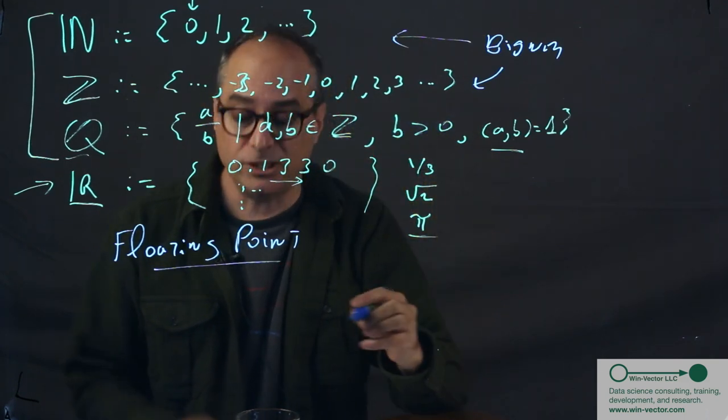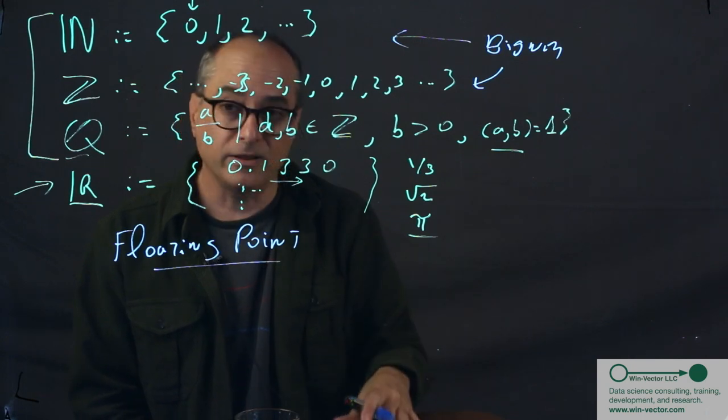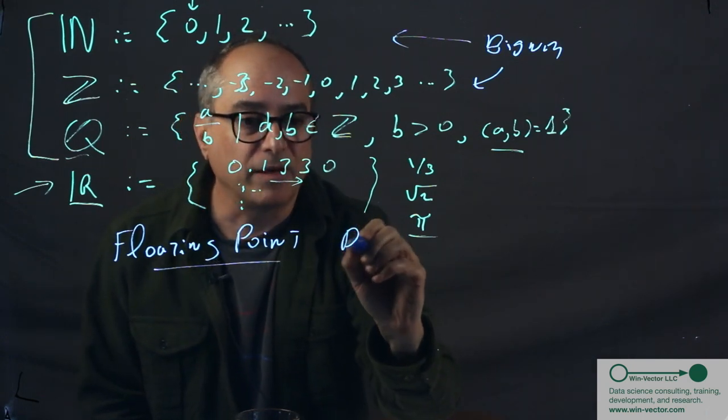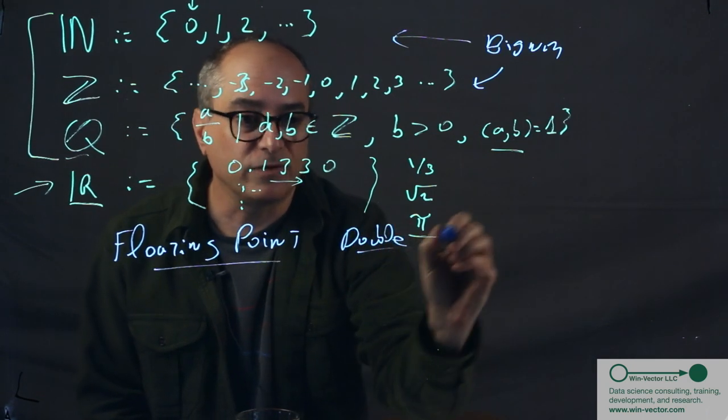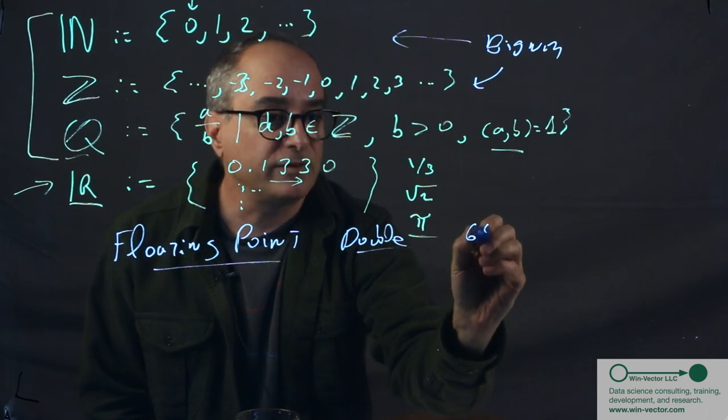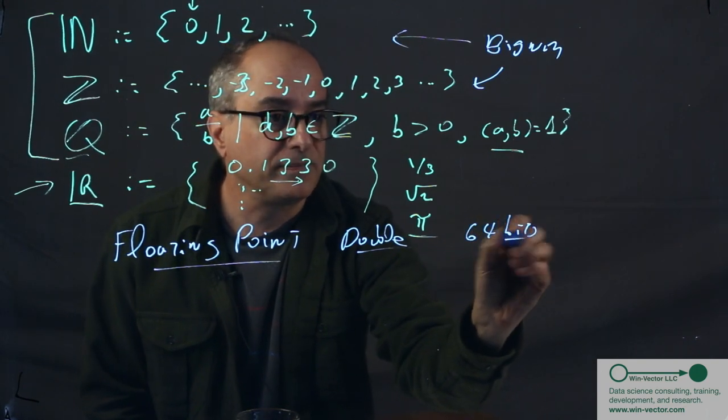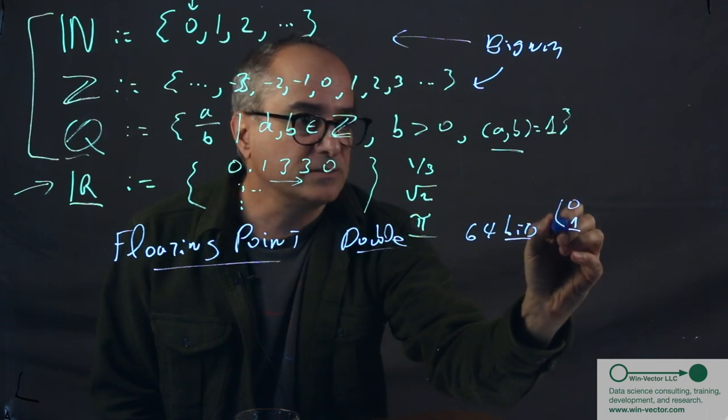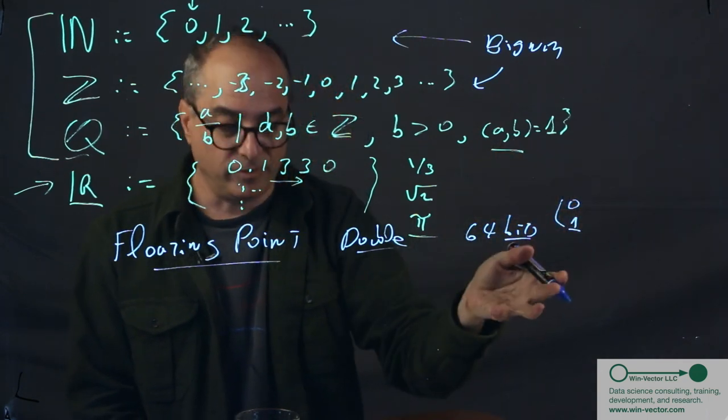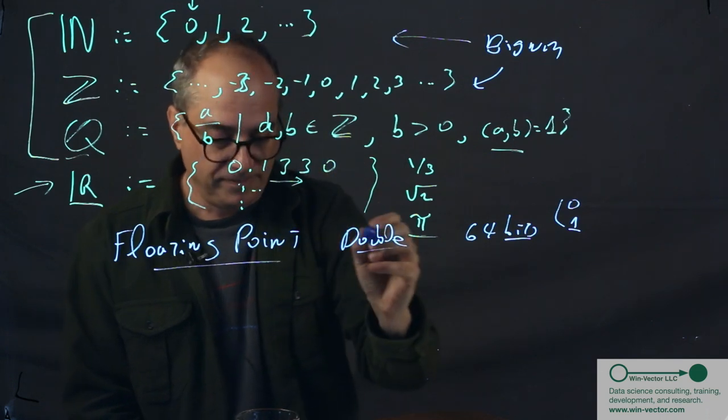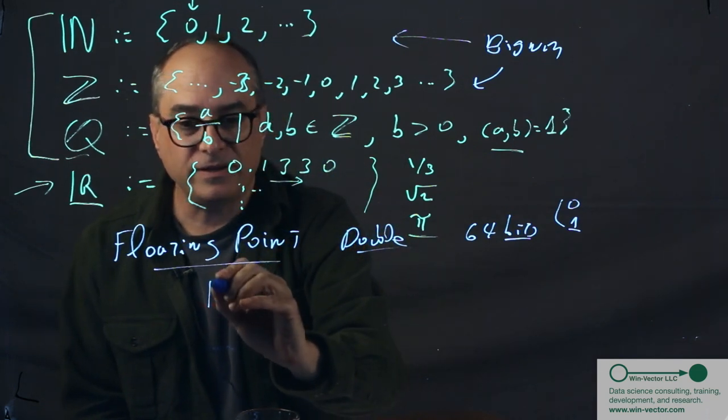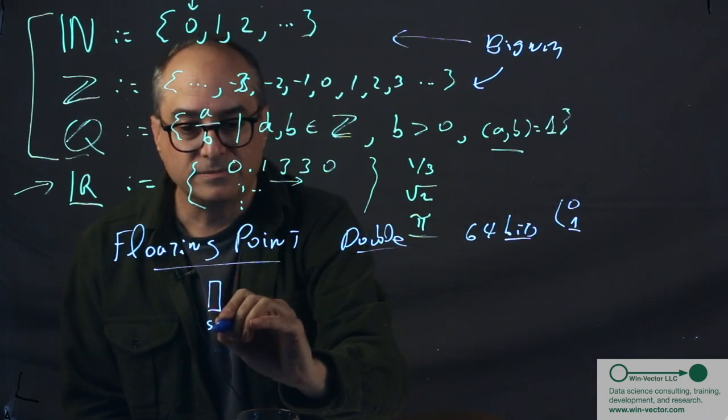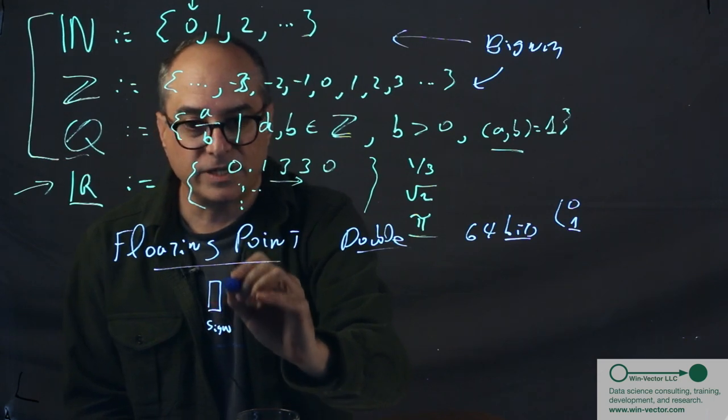So how is a floating point number implemented? And from that implementation, what are its properties? Well, the one that's most common is the double, or double precision floating point number. It's represented as 64 bits. A bit is a value that takes on a zero or a one. So it represents one piece of information. And a floating point number, the highest bit is the sign.